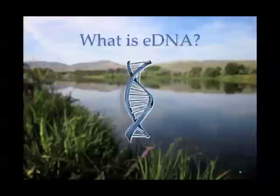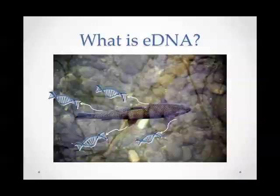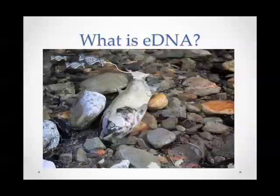Environmental DNA, or eDNA, is naturally occurring genetic material. It can be dissolved or cell-bound, and it persists for a time in the environment independent of the organism it originated from. The source of this eDNA can be naturally sloughed cells, excretions from living organisms, and decaying tissue, which can introduce a lot of DNA into the environment as well.